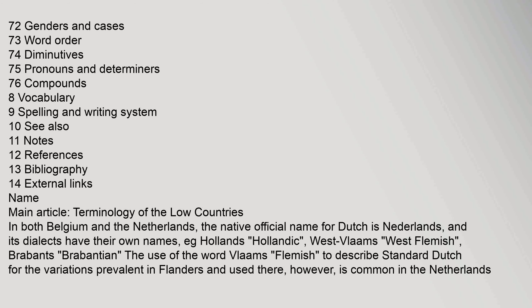In both Belgium and the Netherlands, the native official name for Dutch is 'Nederlands,' and its dialects have their own names, e.g. Hollands, West Vlaams, Brabantse. The use of the word Vlaams to describe Standard Dutch for the variations prevalent in Flanders and used there is common in the Netherlands.